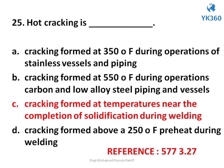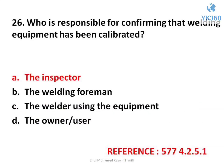Question number 26. Who is responsible for confirming that welding equipment has been calibrated? Options are: A. The inspector, B. The welding foreman, C. The welder using the equipment, D. The owner/user. Answer is option A. The inspector.